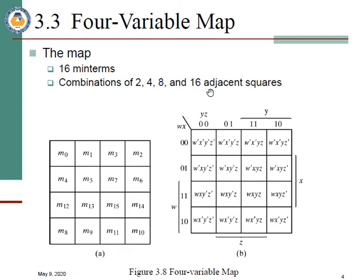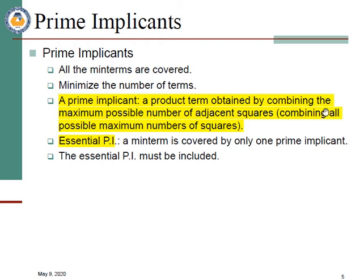The maximum number of groupings in a four variable K-map is 16. Minimum grouping sizes are 2, 4, 8, and 16 — meaning when you group min terms together they can be of size 2, 4, 8, or 16. Now, prime implicants: a prime implicant means a group of min terms that has the maximum number of ones — i.e., the largest possible group of ones.